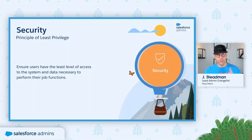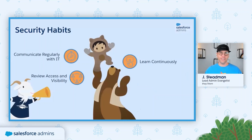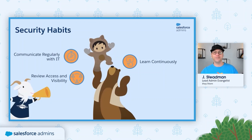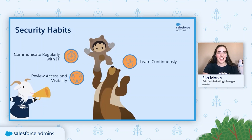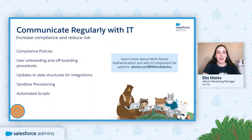And who doesn't love things that are easier to manage? Vampires. That's who. Don't be Team Vampire — be Team Security. Huzzah! So we've covered the vampirism of security, and now it's time to actually discuss our habits. These habits include managing communication with your partners in IT, reviewing the access levels of your users, and staying up to date on security features. Let's start with: communicate regularly with IT.